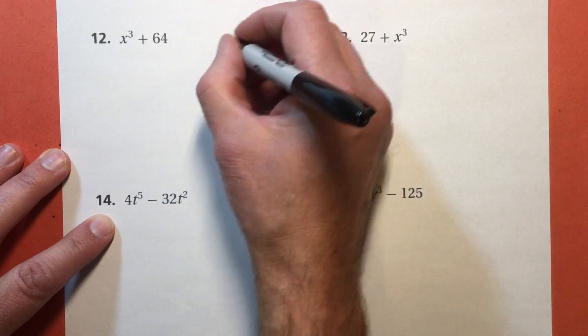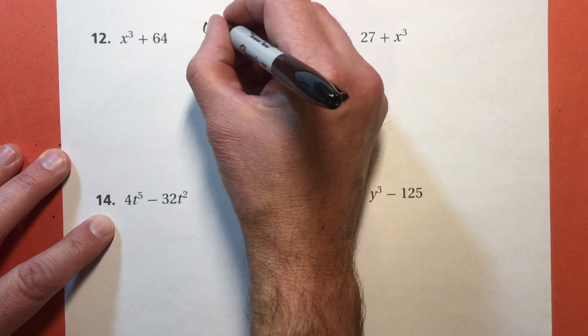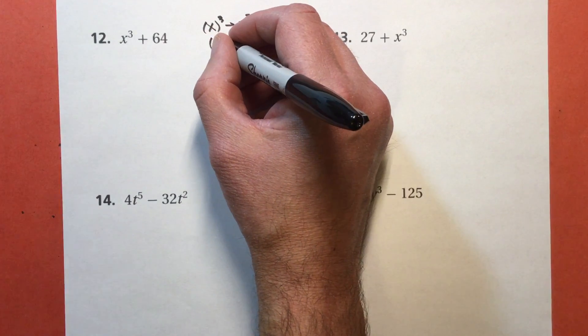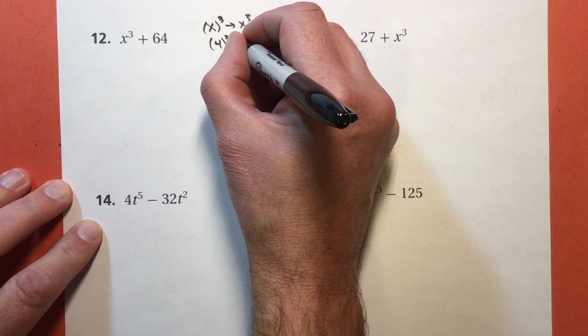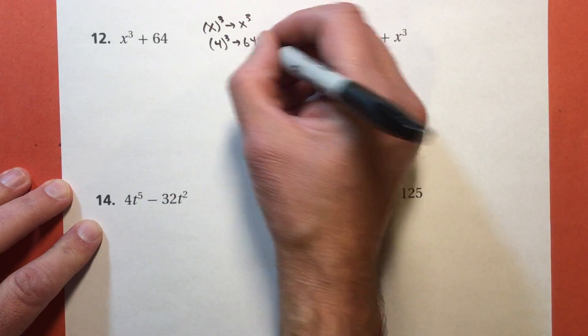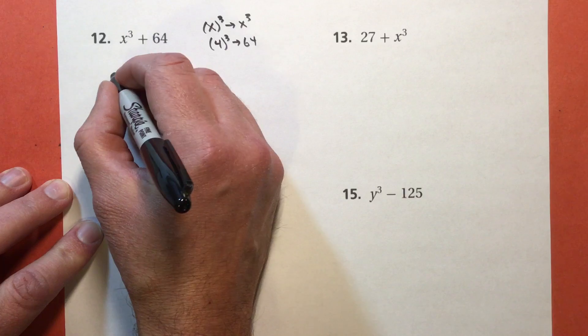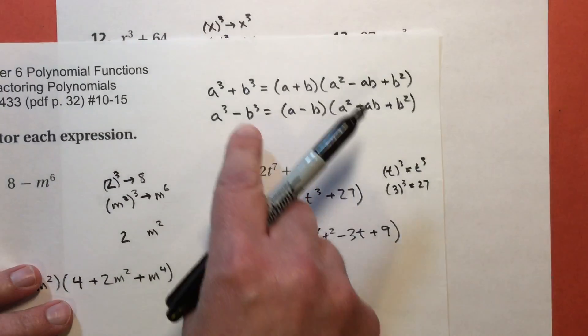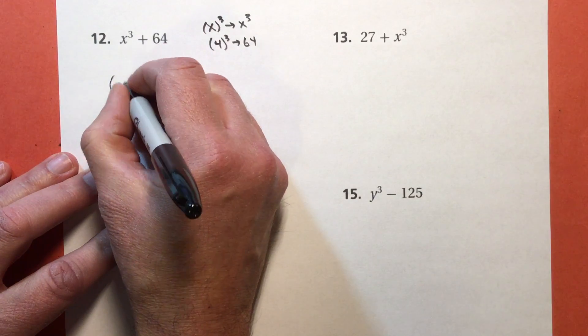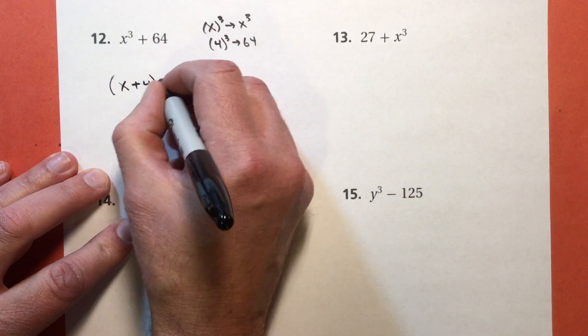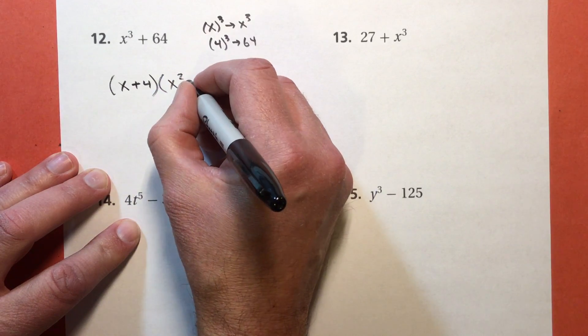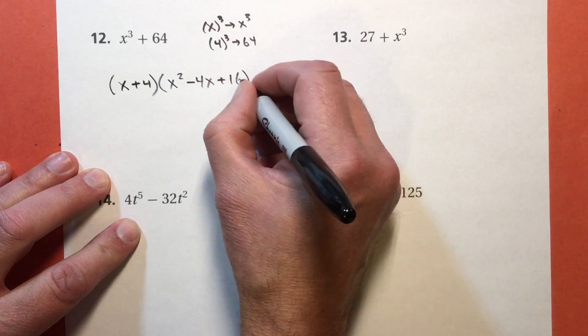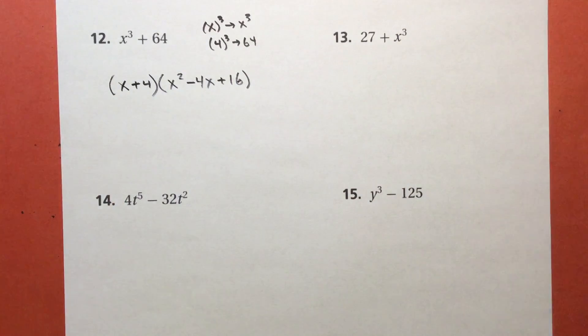In this problem, x cubed plus 64, I've got my x to the third power, which gives me my x cubed. And I've got my 4 to the third power, which gives me the 64. So I'm going to be using x and 4. Since it's a sum, here it is again. Here's the sum. I have x plus 4 times x squared subtract 4x plus 16. Where did the 16 come from? It's 4 squared. And that's it.